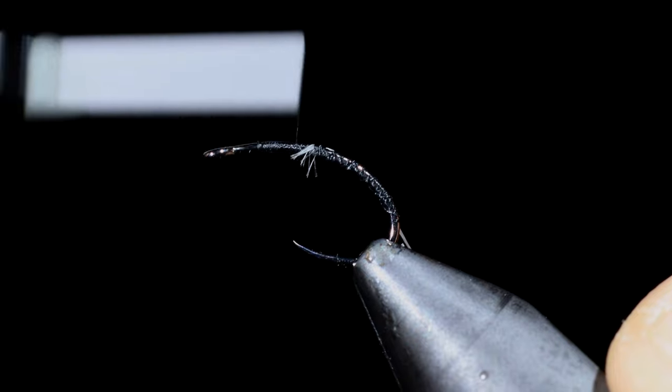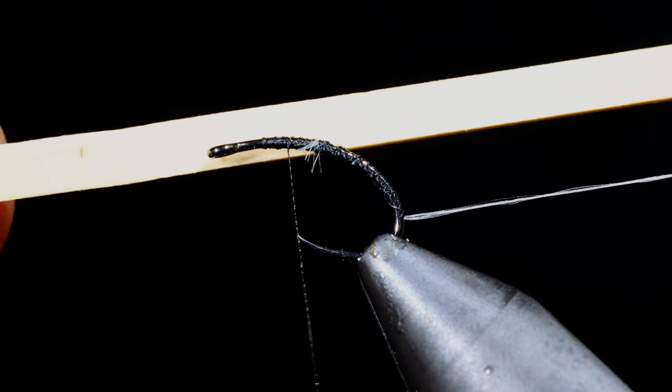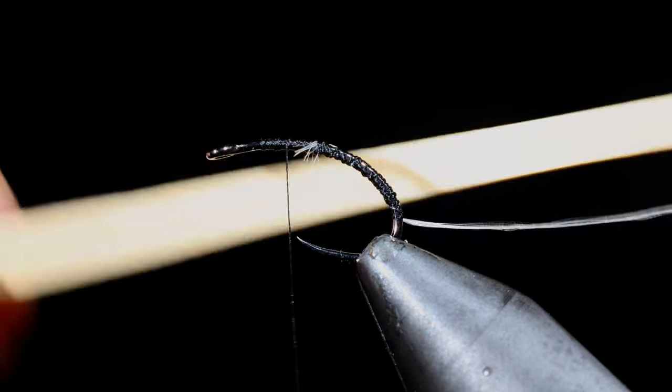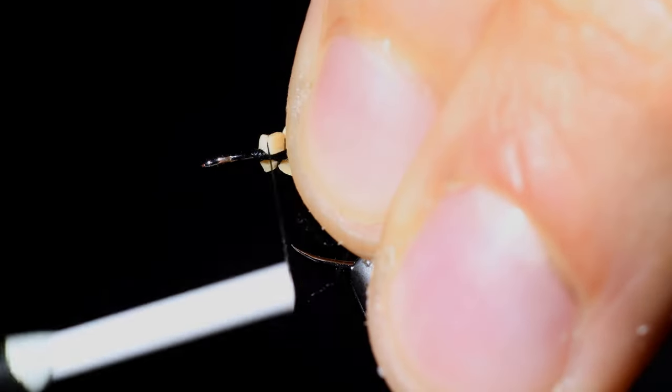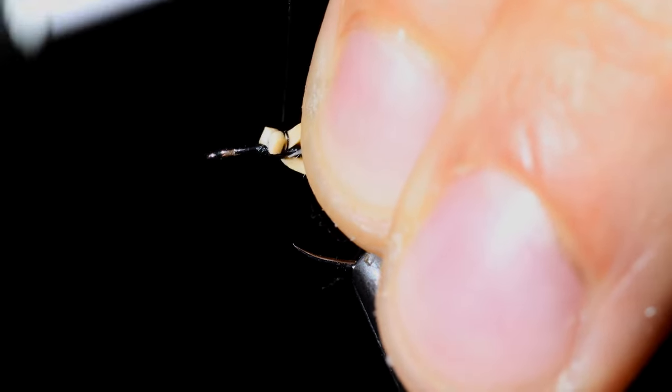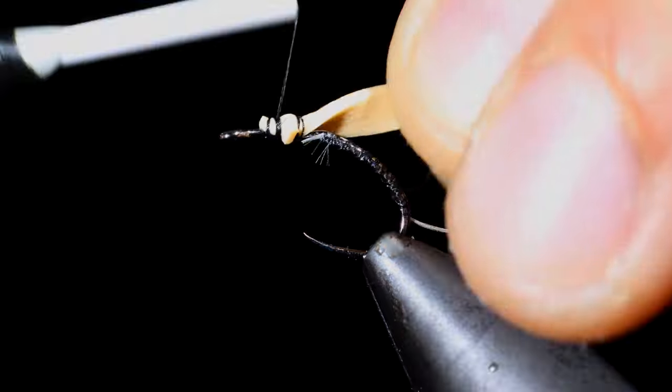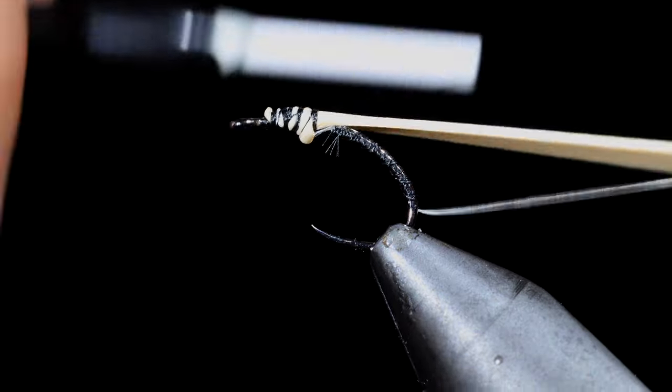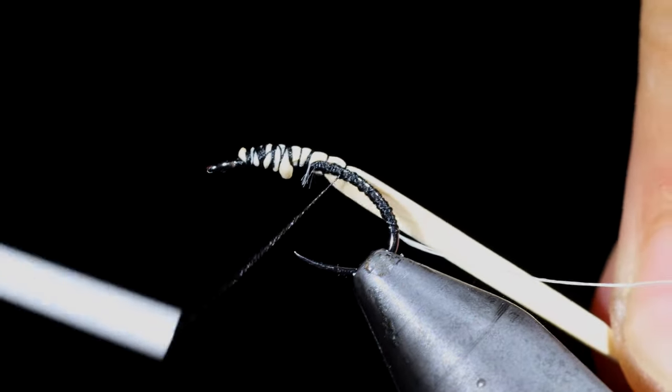Once secured, return your thread back to the head of the fly and grab a rubber band. We will secure it just behind the hook eye, leaving some room for our finishing step. Secure the rubber band tightly and then stretch it out to wrap it into the bend of our hook.